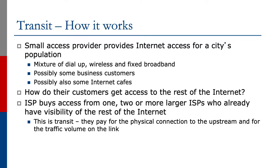So let's look at how transit works. Suppose we have a small access provider providing internet access for a city's population — it could be a mixture of dial-up, wireless, and fixed broadband, possibly some business customers and internet cafes. How do their customers get access to the rest of the internet? The operator will buy access from one, two, or more larger ISPs who already have visibility of the rest of the internet — this is transit. They are paying for the physical connection to the upstream and for the traffic volume on the link to the upstream.